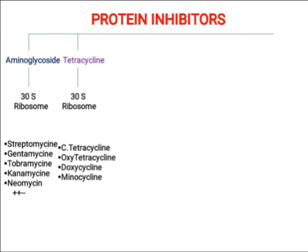The spectrum of tetracyclines covers gram-positive and gram-negative bacteria, and specifically their spectrum is broad for Mycoplasma, Rickettsia, and Anaplasma. However, tetracyclines have side effects including discoloration of teeth and a burning effect on the skin.